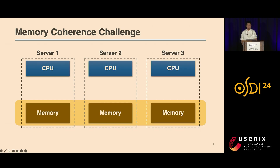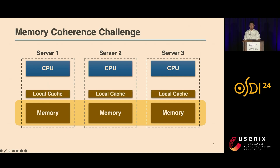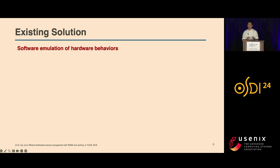Although today's network is much faster, the latency for cross-server memory access is still much higher than local memory access. This difference necessitates the use of caching, which leads to the coherence issue. For example, a mutation in one server's cache is actually not visible to other servers. Most existing DSM systems try to emulate the single machine hardware mechanism for maintaining coherence, but this approach can result in a single memory access severely impacting performance.